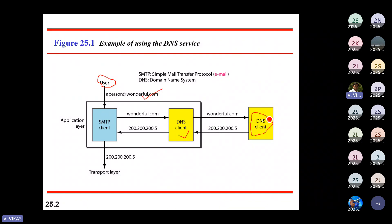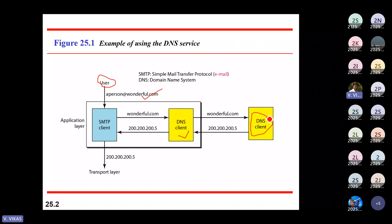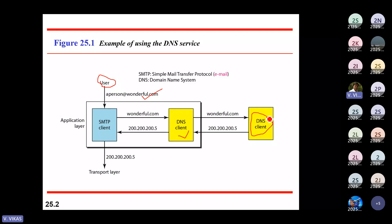The DNS server sends the IP address of wonderful.com back to the DNS client, and the DNS client forwards it to the SMTP client. That information is given to the transport layer, which passes it to the network layer. So given the name of a server, DNS fetches the corresponding IP address.